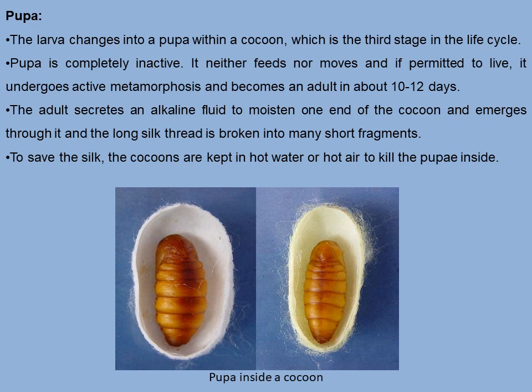The next stage is the pupa. The larva changes into a pupa within a cocoon, which is the third stage of the life cycle. The pupa is completely inactive — it neither feeds nor moves — and if permitted to live, undergoes active metamorphosis to become an adult in about 10 to 12 days. The adult secretes an alkaline fluid to moisten one end of the cocoon and emerges through it. In sericulture, however, the cocoons are kept in hot water or hot air to kill the pupa inside, preserving the long silk thread.